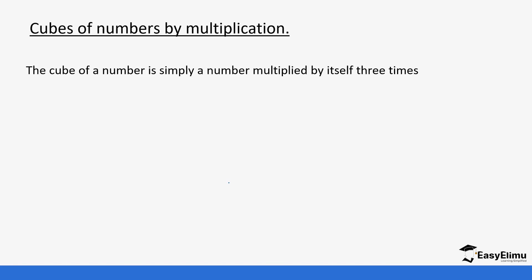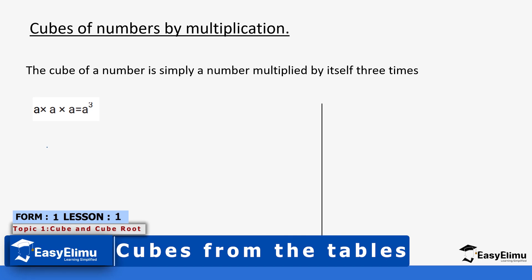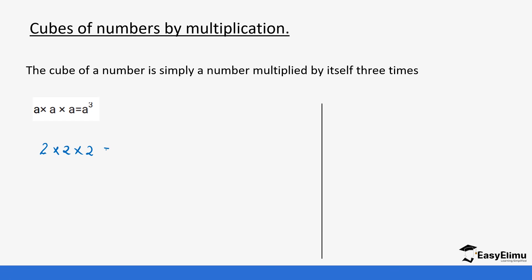Cubes are when you take a number and multiply it by itself three times. For example, if you take an unknown number a and multiply a by itself three times, you form the cube of a. Another example: if you take 2, multiply by 2 and by 2 again, you get the cube of 2, which is 8. If you take 3, multiply by 3 and by 3 again, you get the cube of 3, which is 27.